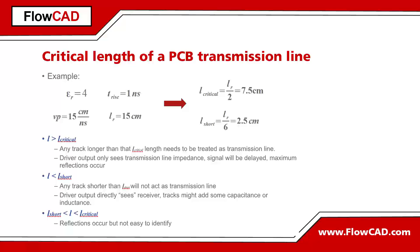This point can be calculated by dividing the length of the rising edge by 6, and it gives the value for the short line condition. In our example, this will be 2.5 cm. A more conservative approach would use a value of 10 instead of 6. The calculation of critical length and short line condition is a very useful method to judge signal performance, taking into account rise time and physical dimensions.